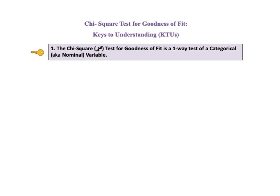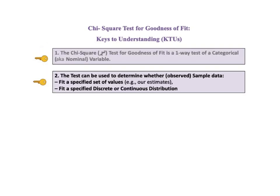The first key to understanding tells us that the chi-square test for goodness of fit is a one-way test of a categorical variable, also known as a nominal variable. KTU number 2 says the test can be used to determine whether observed sample data fit a specified set of values — for example, our estimates — or if they fit a specified discrete or continuous distribution.